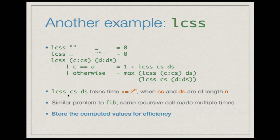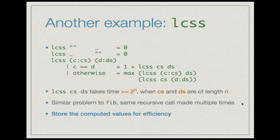One can prove that computing LCS of two strings of length n takes at least 2^n time with this naive approach. There is a similar problem to fib in that the same recursive call is made multiple times with the same arguments. The easiest way out is to store the computed values for efficiency — store the values computed and extract them later rather than recomputing.